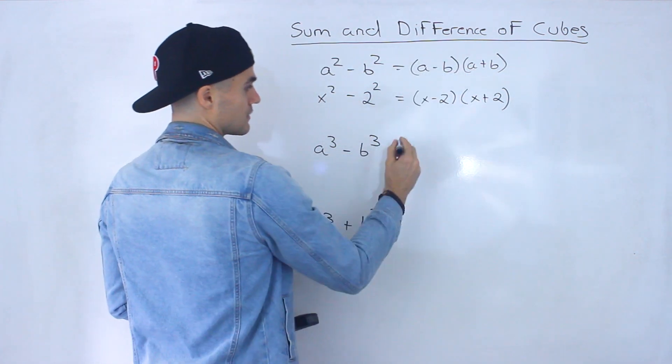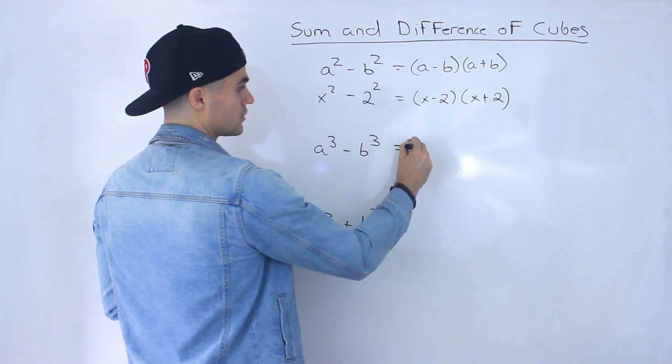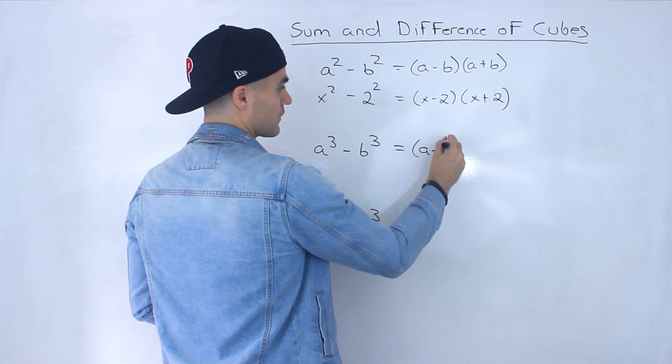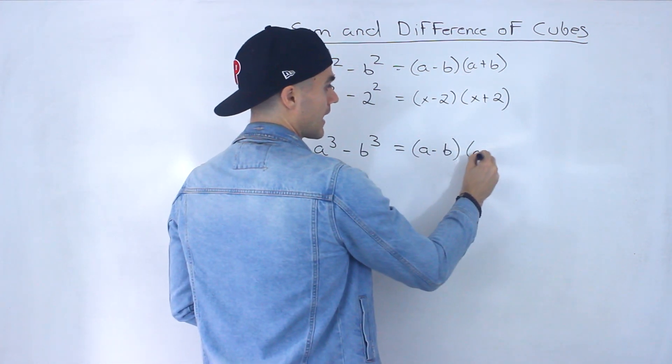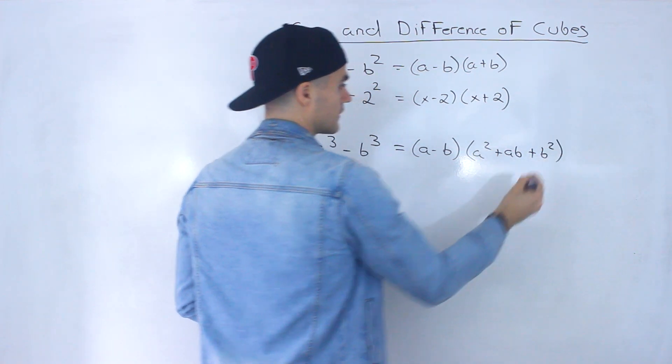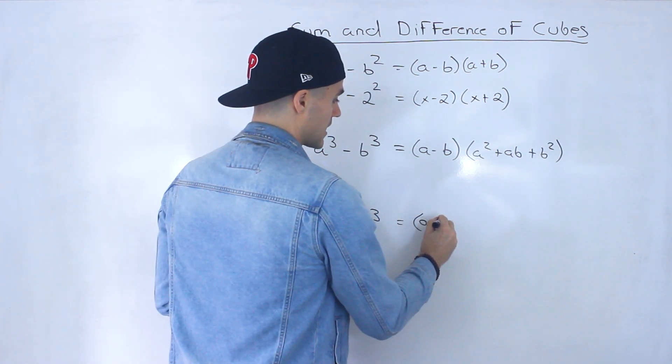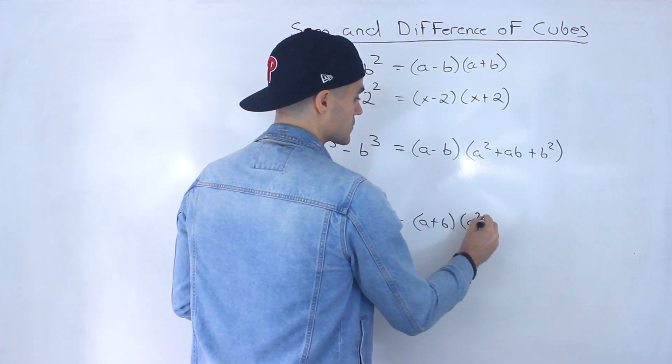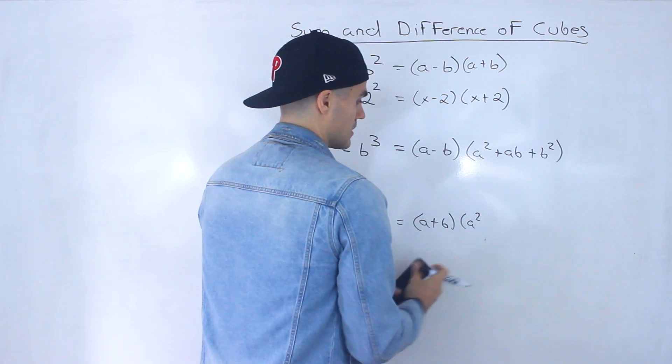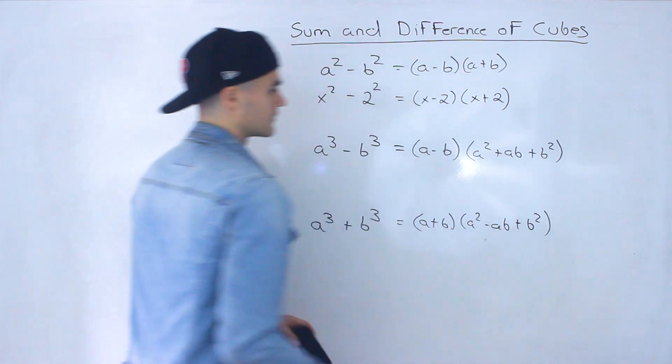And then these respective equations are a little bit more complex. So this a cubed minus b cubed, the equation for that is a minus b, and then you got a squared plus ab plus b squared, like that. And then a cubed plus b cubed, when you factor that, it's going to be a plus b, and then you're going to have a squared minus ab plus b squared.